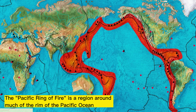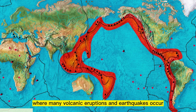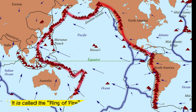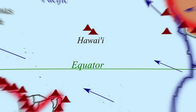The Pacific Ring of Fire is a region around much of the rim of the Pacific Ocean where many volcanic eruptions and earthquakes occur. It is called the Ring of Fire since many volcanoes lie along this belt.